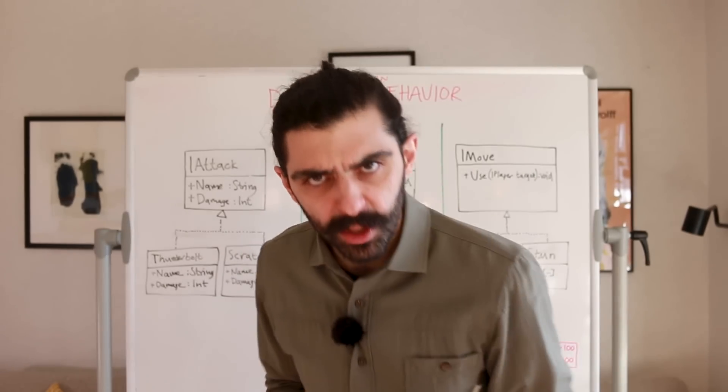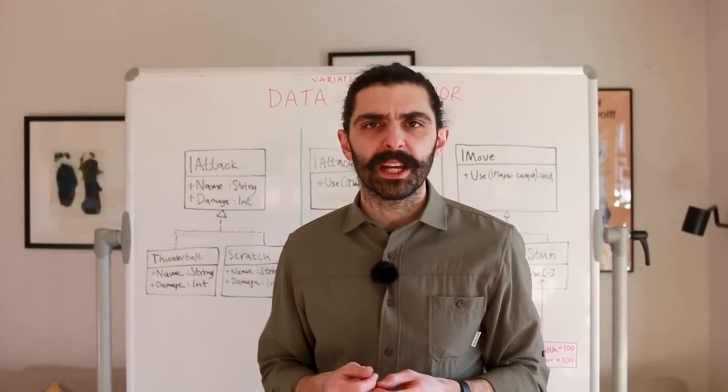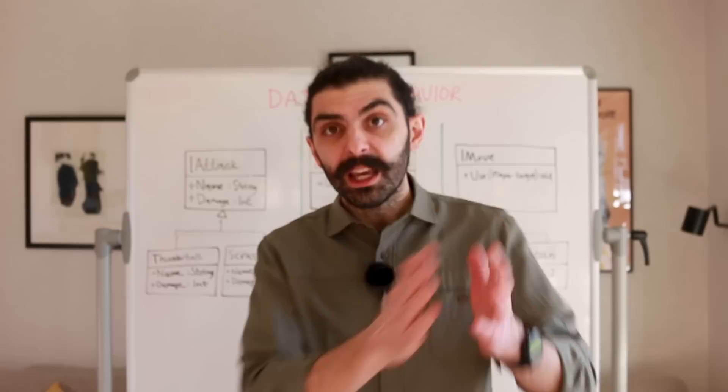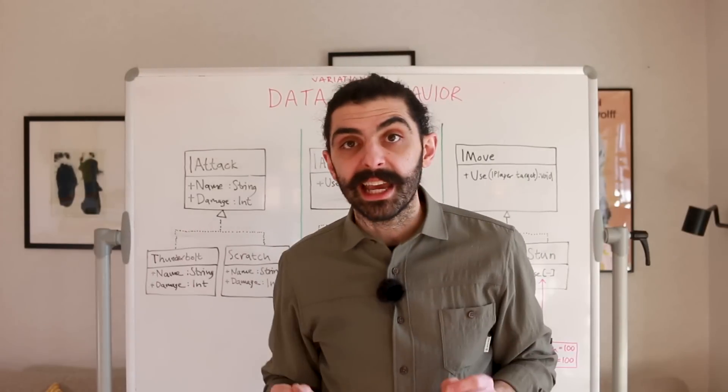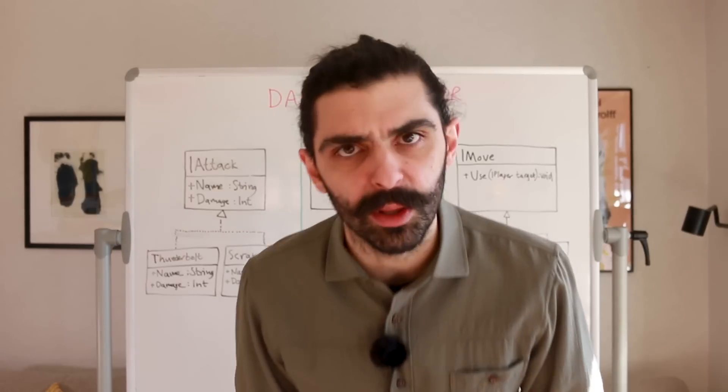But if you instead use subtype polymorphism when you have variations in data, not in behavior, then you make the code more complicated and less flexible. So what should you do when you have variations in data and not in behavior? You don't need subtype polymorphism — you just need a regular old class. A class can solve your problem if all you have is variations in data. But if you have variations in behavior, then you need subtype polymorphism.